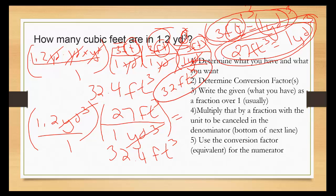Now let's confirm the significant figures. We have two significant figures in the initial number, so the answer will have two. The conversion factor is a definition and doesn't count toward significant figures. Therefore, 32 cubic feet is the final answer in both methods. And that's how you do dimensional analysis — there's really no shortcut; it just takes practice, and the more you practice, the better you'll get.